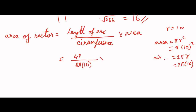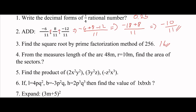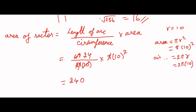So area equals π into 10 squared. 10 and 10 square cancel, π and π cancel, so 2 and 48 cancel to give 24. The area of the sector is 240 square metres.